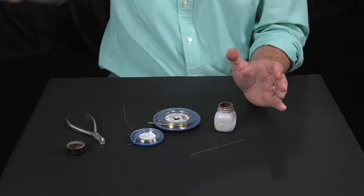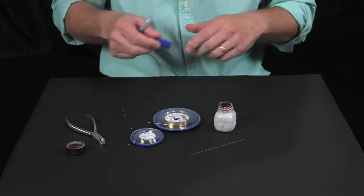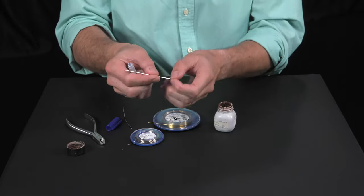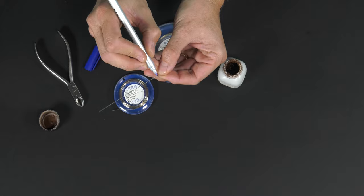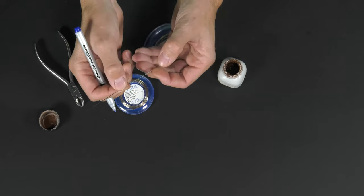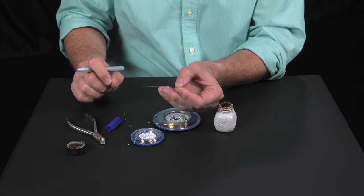First, we mark on the wire the point where we want to perform the soldering. In the mouth it would be distal to the central and lateral incisors.